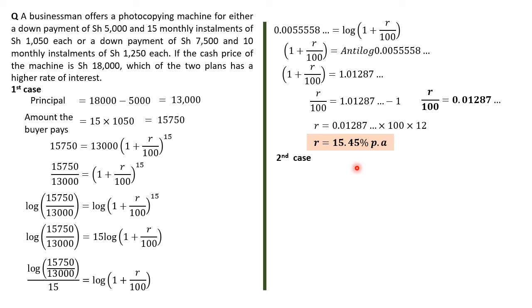What about the second case? In the second case, the person will have a principal of 18,000 minus 7,500. Remember, that's the deposit for the second case. Therefore, the borrowed money is, this time around, 10,500.